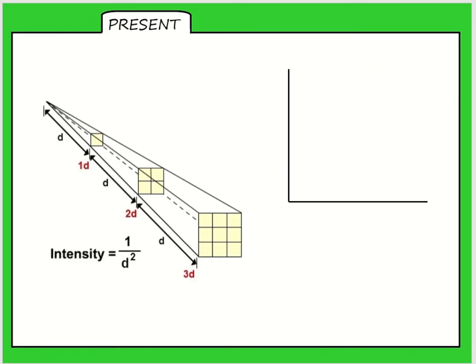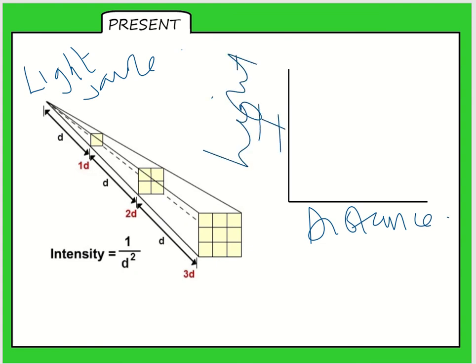This is the inverse square law. You can see here this would be the point where the light source would be. So we would have distance on the x-axis and light intensity on the y-axis. What happens is as distance increases, the light intensity decreases. So it forms a pattern like that. That's called inverse proportion because it's doing the opposite of what you'd think. That means that the distance increasing means that the light intensity decreases.